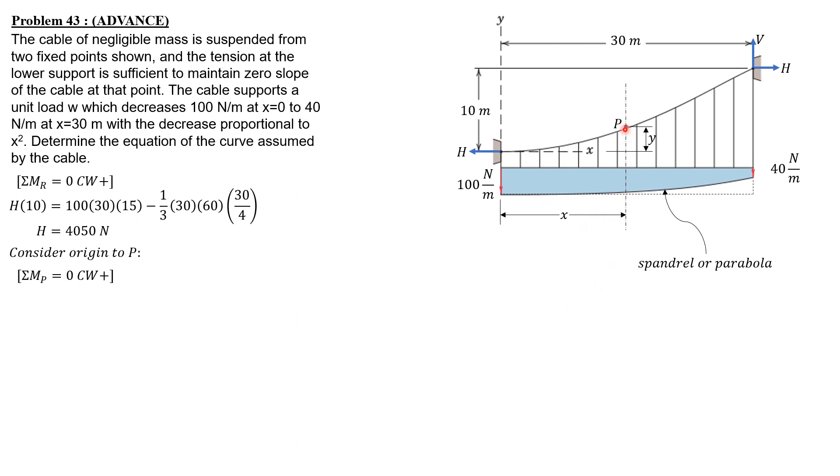Summation moment about P equals zero, clockwise as positive. So we have H, which is 4050 times Y, equals rectangle 100 times x times x over 2, minus one third of x times W times x over 4, the moment arm. Simplifying, Y equals x square over 81 minus 1 over 48,600 W x square.